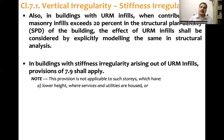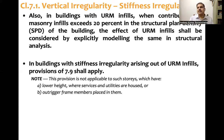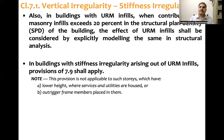However, this provision is not applicable to stories which have lower height where services and utilities are housed, or where outrigger frame members are placed. An outrigger frame is typically a truss running on the periphery of the structure and connecting to the core. In such cases, this clause does not apply and modeling per clause 7.9 is not required. In summary, a soft story is any story whose stiffness is less than the story above, and if URM infills contribute more than 20 percent, they must be modeled per clause 7.9.